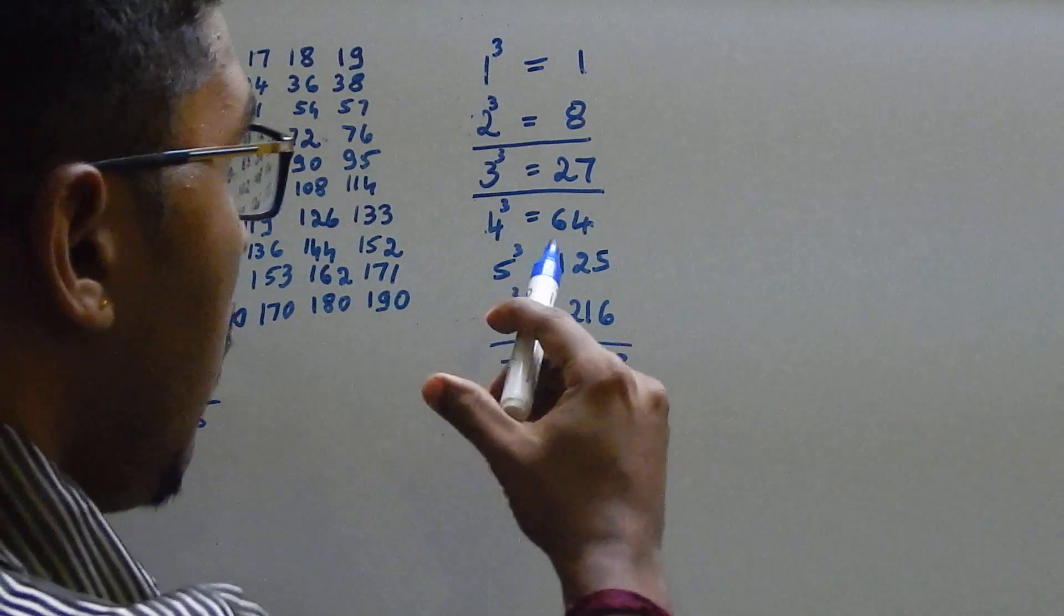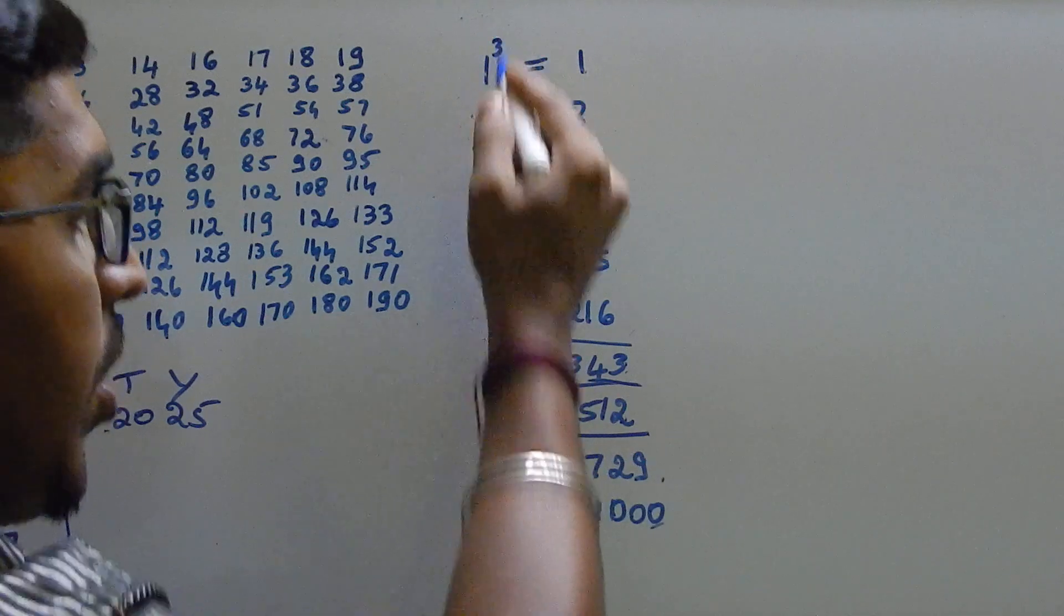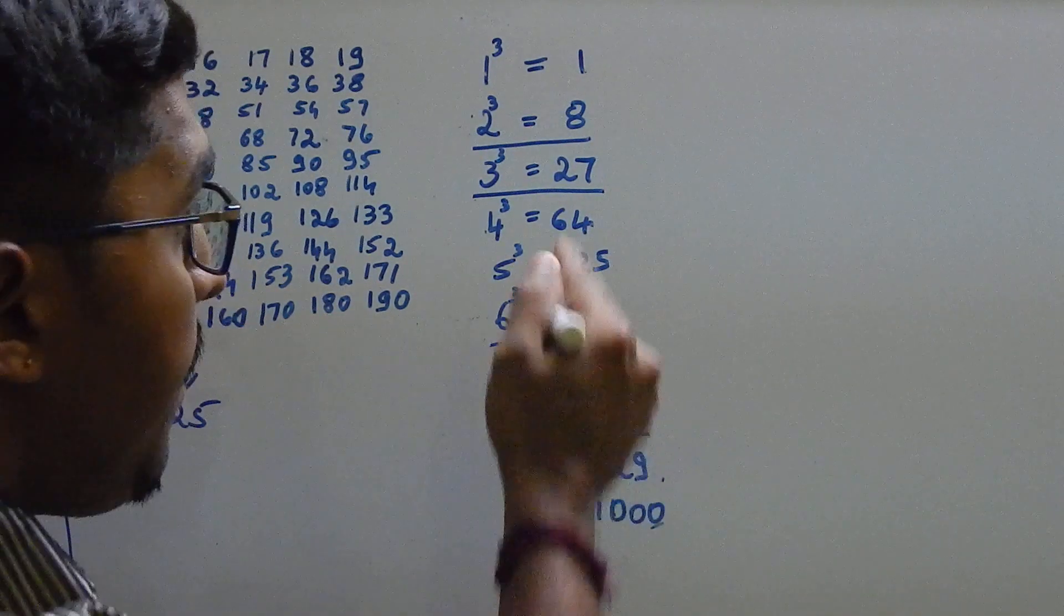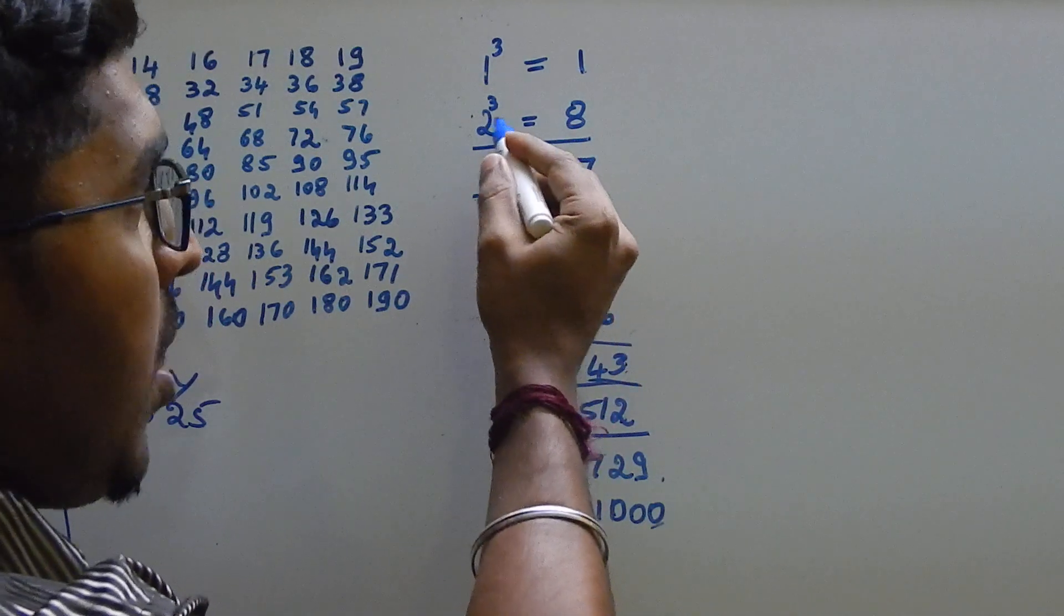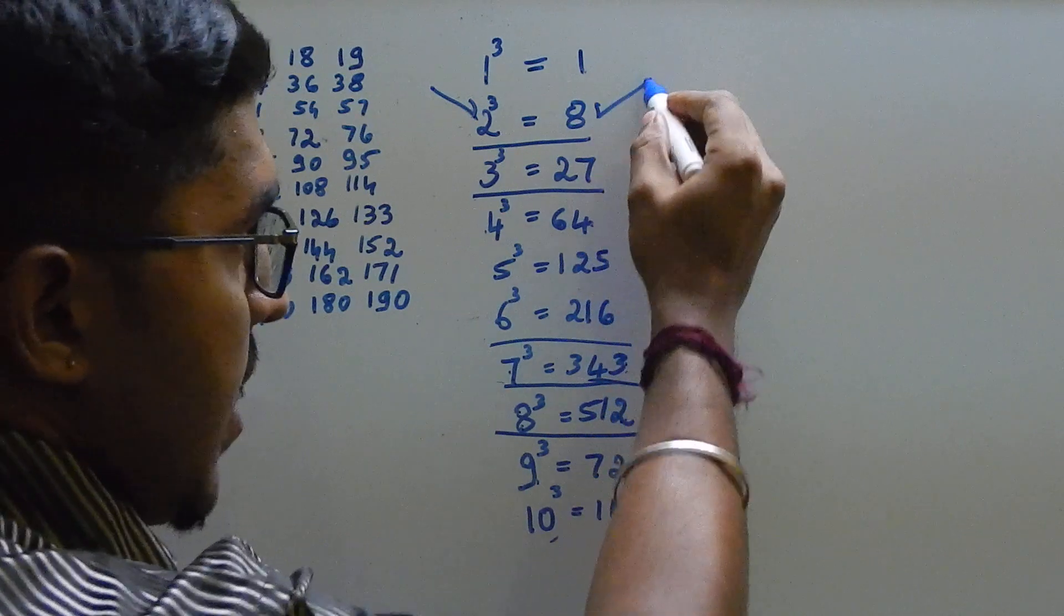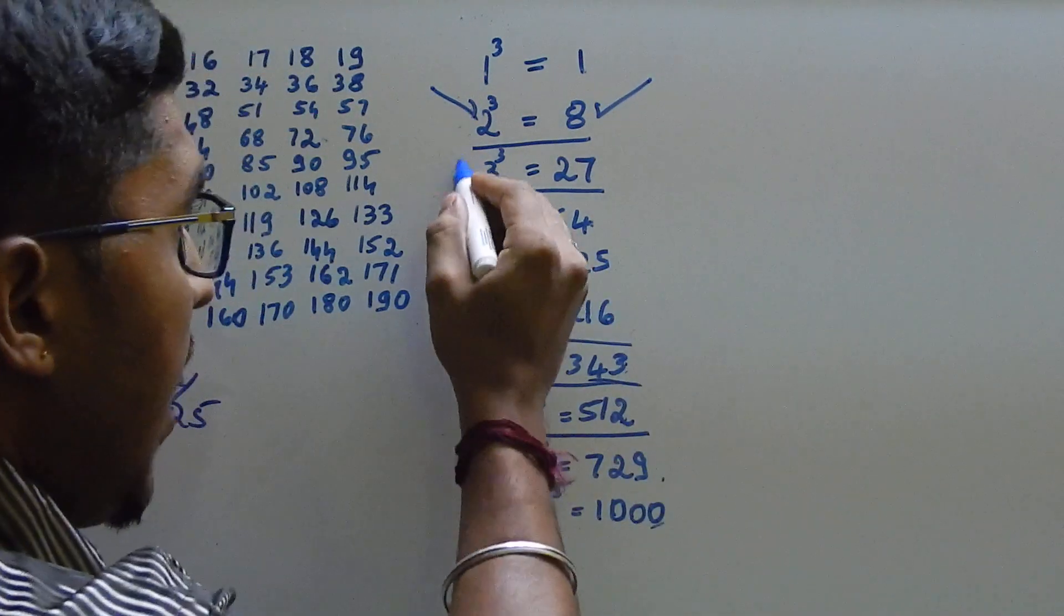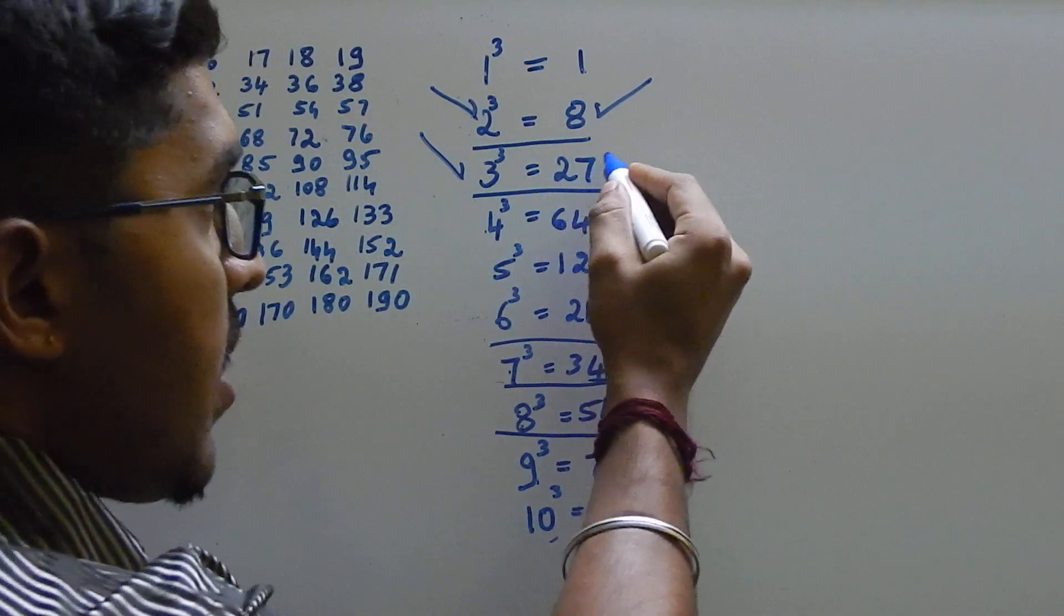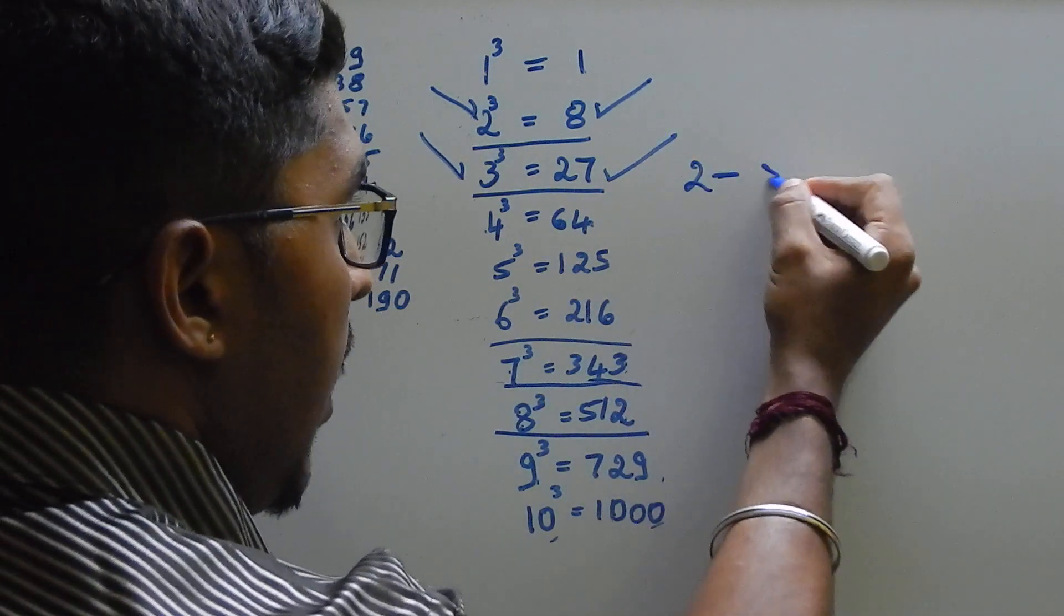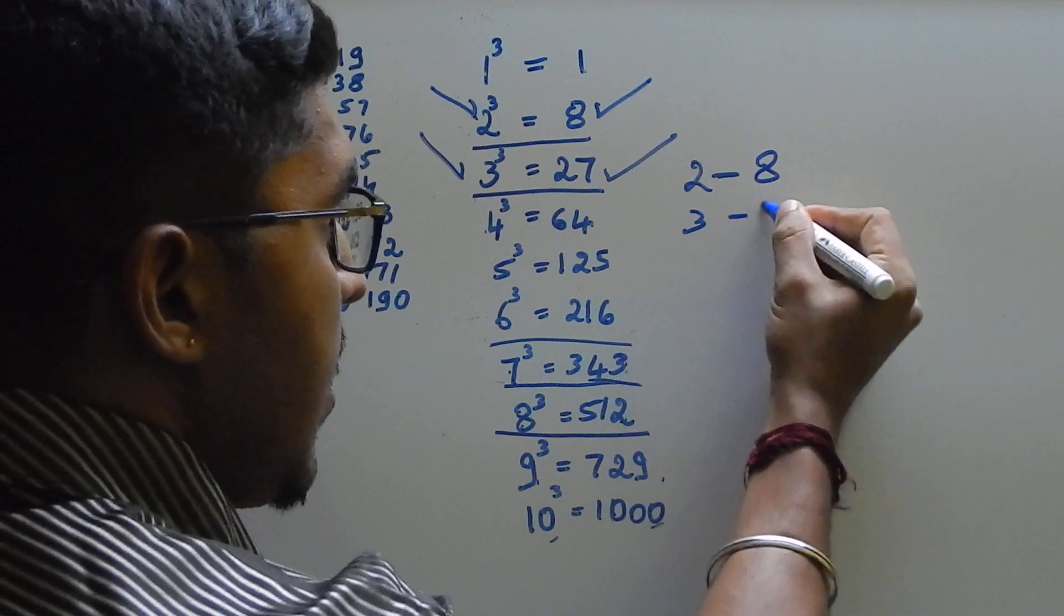If you carefully observe all the values from 1 cube to 10 cube, you can easily make out that if there is number 2 in the LHS, there is number 8 in the RHS. If there is number 3 in the LHS, then there is number 7 in the RHS. 2, 8, 3, 7.